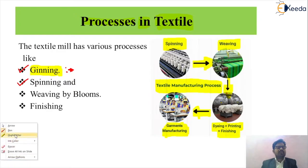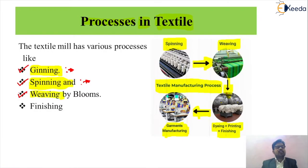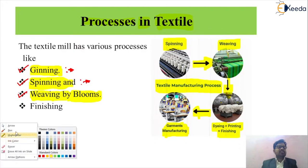The second process is called the spinning process. In spinning, we twist the cotton material to get different types of layers of that cotton. After getting the layers, we move to the next process called weaving. In the weaving process, we take the different cotton materials and weave them according to our requirement. This weaving is done by the looms, which use different types of loom motors.